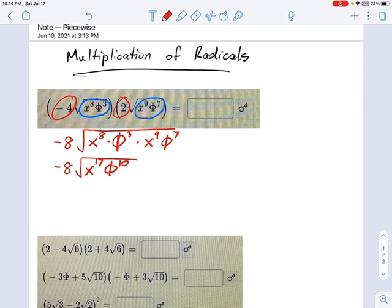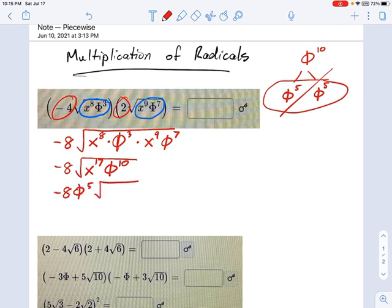Now if you think about these things, what is phi to the 10th power? We could make a factor tree for that. It doesn't take too long until you can stop. Phi to the 10th is just phi to the 5th times phi to the 5th. Those 5s add up to 10. So what's the square root of this pair? You just pull out one of those phi to the 5ths, and you get negative 8 phi to the 5th times the square root of x to the 17th.